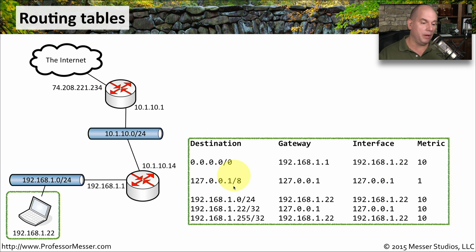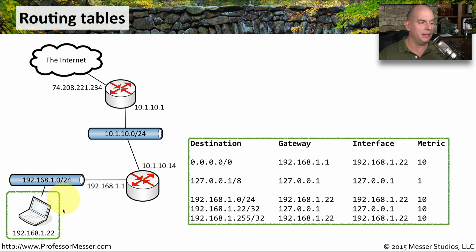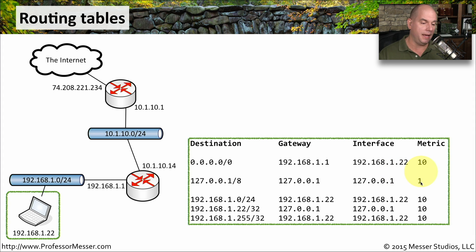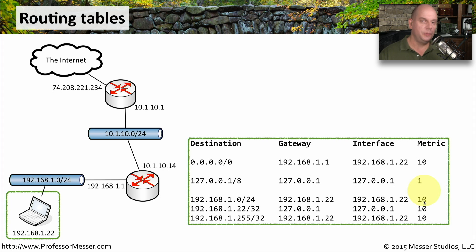There is a 127.0.0.1/8 destination inside of the routing table — that is the loopback address. Every device has a loopback address, and the 127 network tells us it's the loopback network. The gateway is internal to the device, metric of one since it's local. Then there is 192.168.1.0/24 — that entire subnet is reachable via 192.168.1.22 because it's local to this computer, with a metric of 10. The next entries are 192.168.1.22/32 — a very specific individual IP, not an entire subnet.